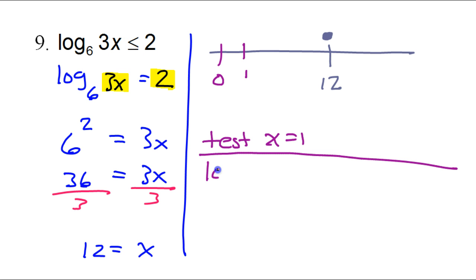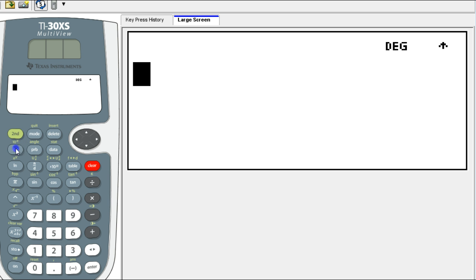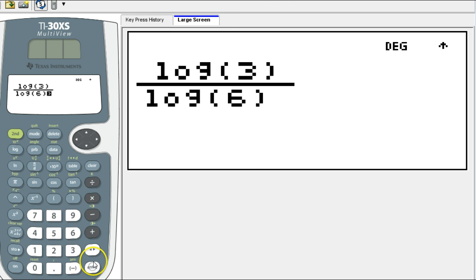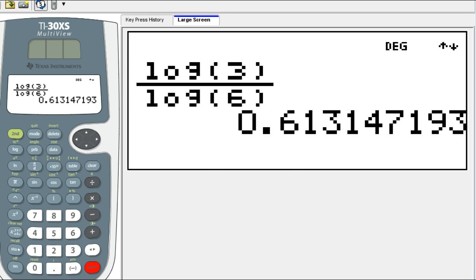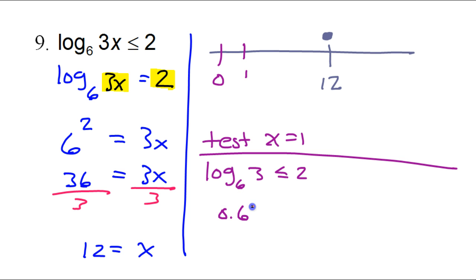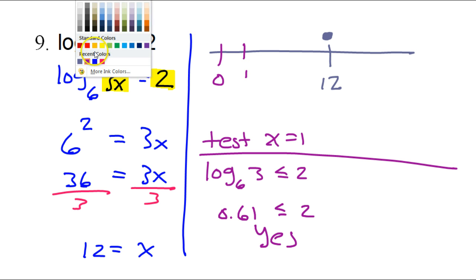If I put in 1 right here, then that makes log base 6 of 3, because 3 times 1, that's just 3. And that's going to be less than or equal to 2. I can evaluate this in my calculator. So in my calculator, that would be log 3 over log 6. So that's 0.61. So I've got 0.61 is less than or equal to 2. Well, that's a true statement. It is less than or equal to 2. So that means this, yes, is the solution side of the equation. This is where all the solutions live over here. So this is the no side over here.